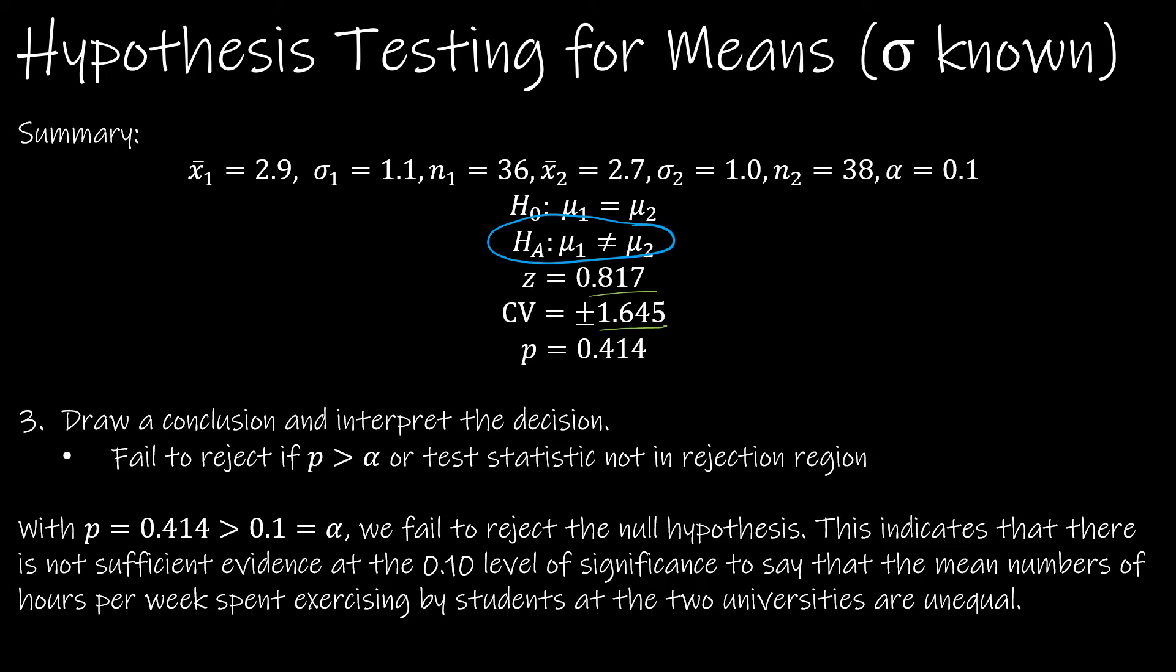Remember, we always talk about the alternative. This indicates that there is not sufficient evidence at the 0.1 level of significance to say that the mean numbers of hours per week students spent exercising by students at the two universities are unequal.